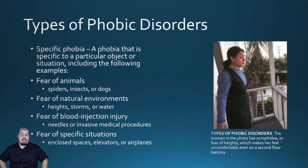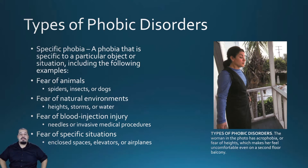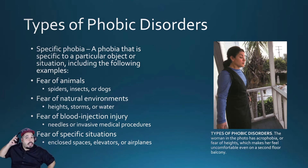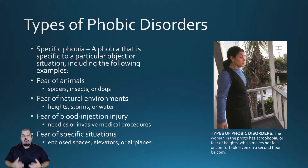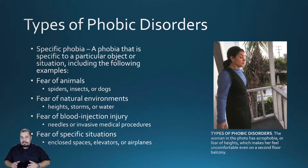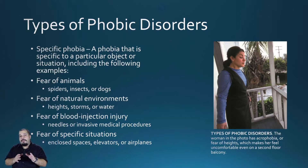Specific phobias pertain to particular objects or situations. When a person is put in one of these situations, they experience symptoms of anxiety and panic disorder. For example, arachnophobia is the fear of spiders — but simply disliking spiders is not arachnophobia. If you don't feel the onset of anxiety, faster breathing, increased heart rate, dilated pupils, or immobilizing fear, you do not have arachnophobia. Other specific phobias include claustrophobia (enclosed spaces), acrophobia (heights), mysophobia (germs or dirt), ophidophobia (snakes), nyctophobia (darkness), and zoophobia (animals).